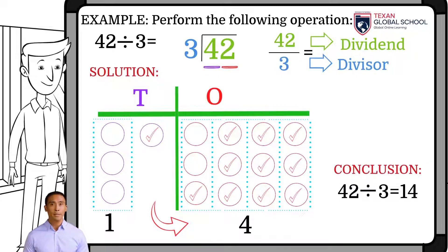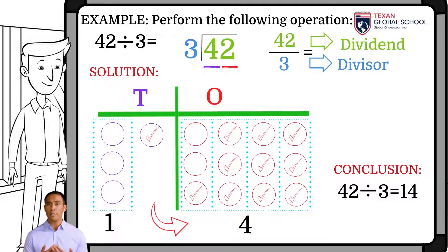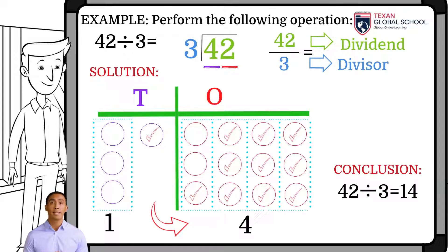which is the division quotient. We conclude then that 42 divided by 3 equals 14. Since there were no elements left over in the 1s, the remainder is 0. We can verify by multiplying the divisor 3 with the quotient plus the remainder 0. The result should be the same dividend 42.